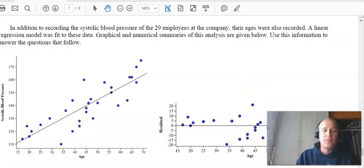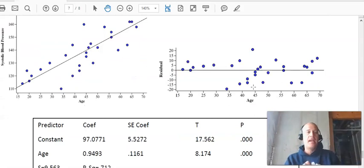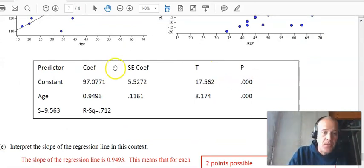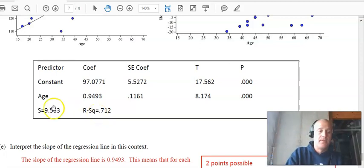Okay. Finally, we have the latest, what we've been learning with scatterplots. So in addition to the systolic blood pressure of 29 employees, their ages are recorded, a linear regression model to fit. All right. So they're seeing there's a connection between age and blood pressure. And so this is more about reading a computer output than anything else. So this 97.0771 is your Y intercept. This 0.9493 is the slope of the least squares regression line. And this is your constant of determination. You have to find your regression coefficient, your correlation coefficient by square rooting that number. So if I take the square root of 0.712, I get 0.84. So the correlation coefficient is actually 84%. And that's the number you're going to reference here below.